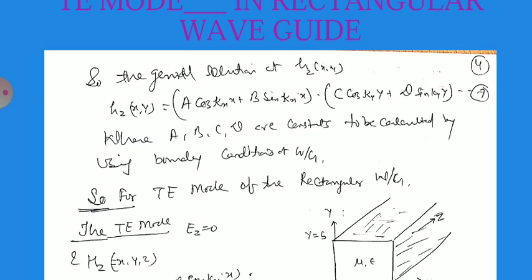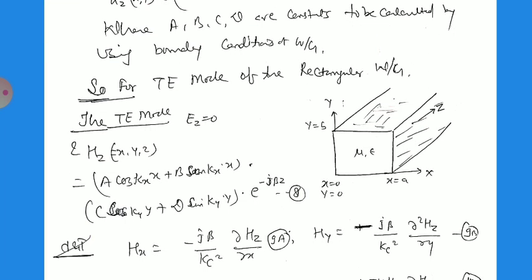The general solution for hz(x,y) is the product: hz(x,y) equals (A·cos(kx·x) + B·sin(kx·x)) times (C·cos(ky·y) + D·sin(ky·y)). The constants A, B, C, D are calculated using the boundary conditions of the waveguide. The boundary conditions for the rectangular waveguide are: x equals 0, x equals a (width), y equals 0 (bottom), and y equals b (height).